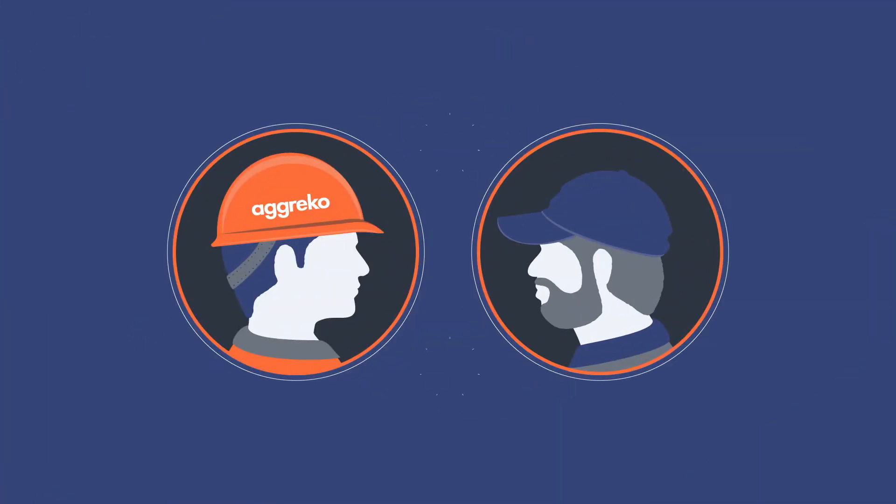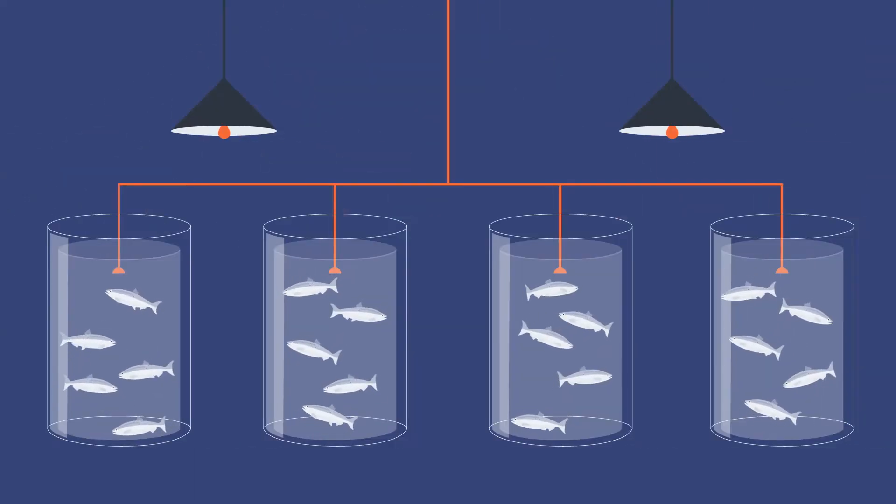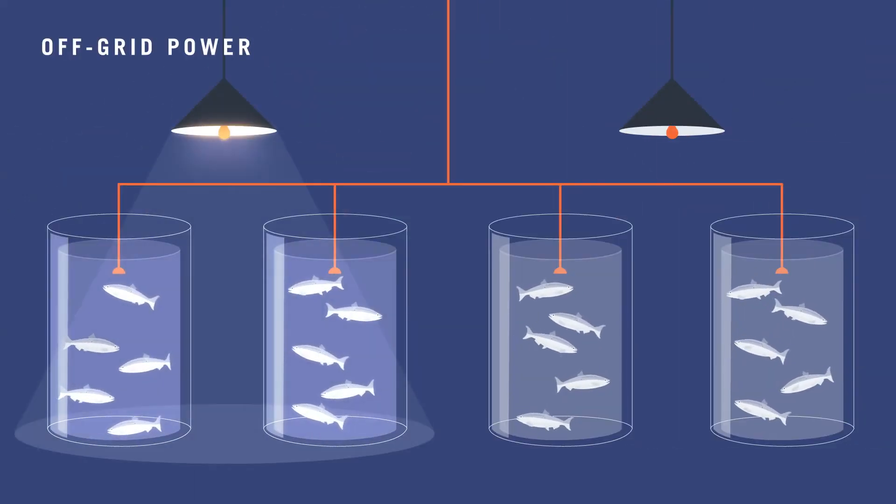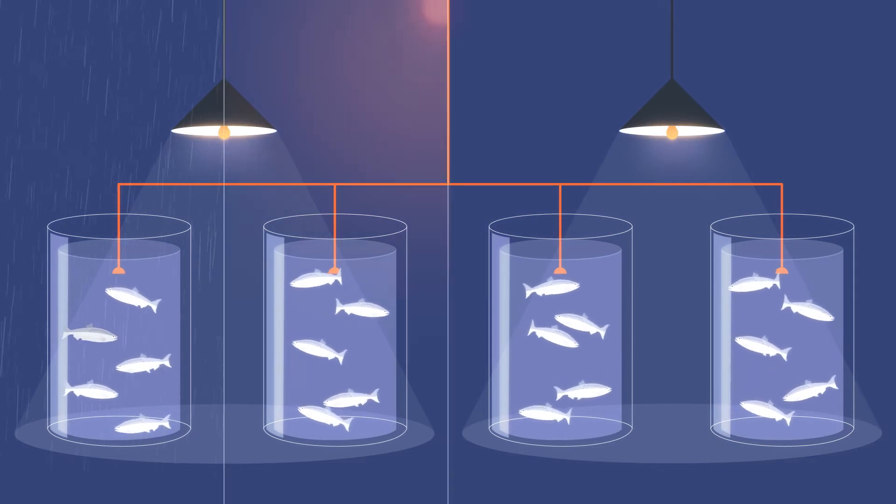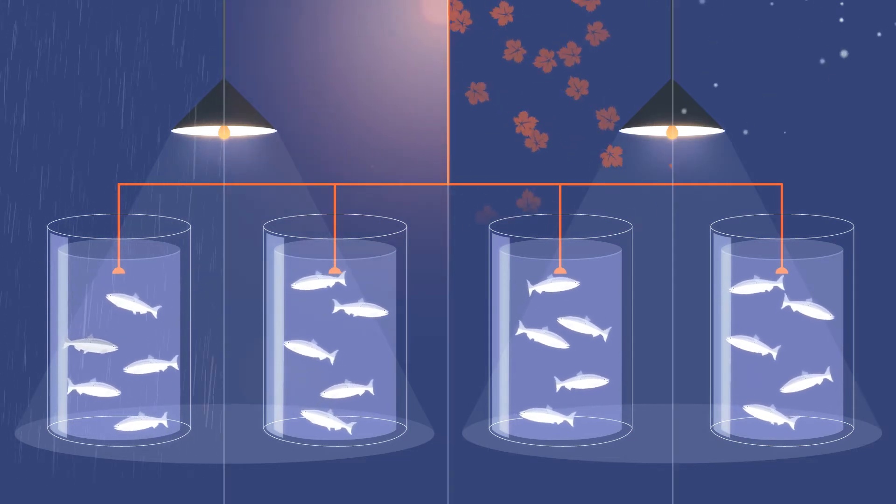Agreco's team of experienced specialist engineers assist fish farmers overcome a number of challenges, from providing off-grid power to remote locations to ensuring stable critical water temperatures during seasonal changes.